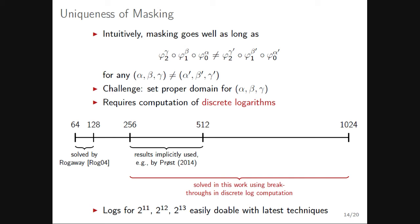For the 1024-bit case, similarly to the TLS talk earlier today, a large pre-computation is required — about 33 hours in our case. Computing concrete discrete logarithms afterward took roughly 50 hours in total on a standard desktop machine.